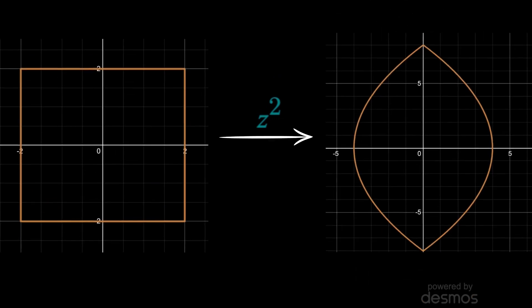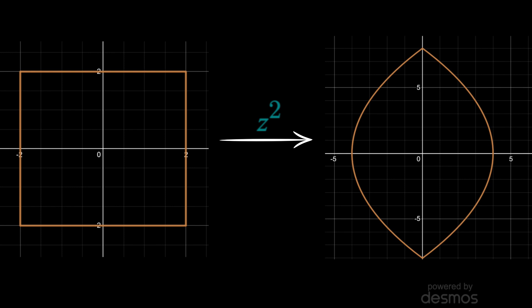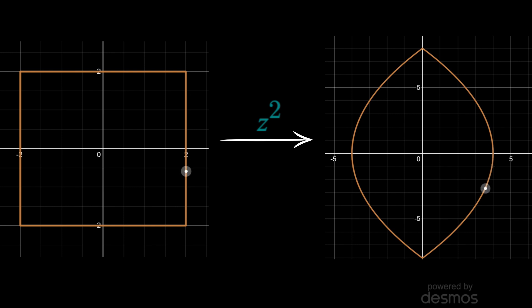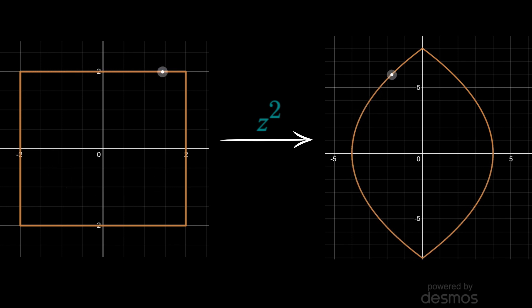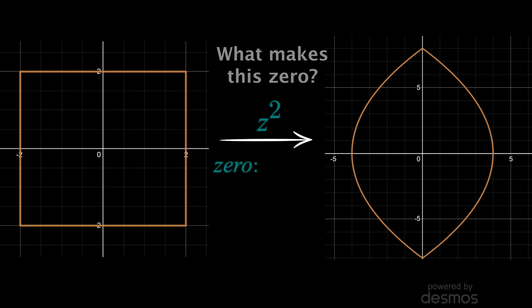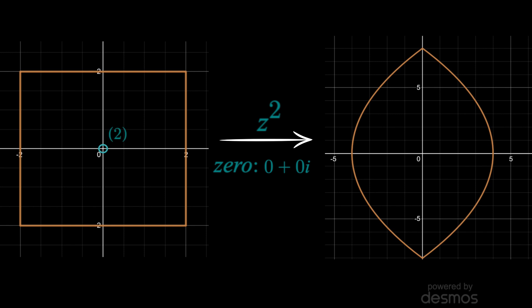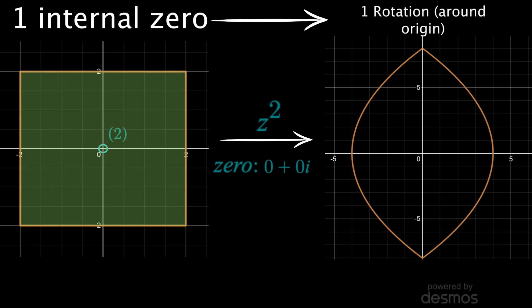If we consider the input path to be a single clockwise rotation around the origin, then the output will actually include two rotations. Notice that as we move the input around, the corresponding output moves twice as fast — it's already gone around once while the input has only done half a rotation. So we end up getting two rotations on the output for every 1 on the input. To see why: we find what makes z squared equal to 0, which is 0 plus 0i at the origin. But due to multiplicity, or the exponent, we really say there are two zeros there. The rule is: for every zero inside your input contour, the output will go around the origin once — meaning two internal zeros means two rotations.